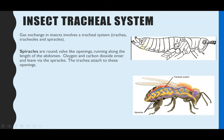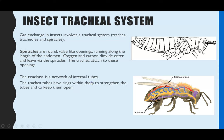The spiracles can open and close to control water loss, with oxygen diffusing in and carbon dioxide diffusing out. The spiracles attach to the trachea, which are a network of internal tubes within the insect. To keep those tubes open — a bit like the trachea in animals — they have rings within the trachea to strengthen them and stop them from collapsing, so gases can constantly move in and out.